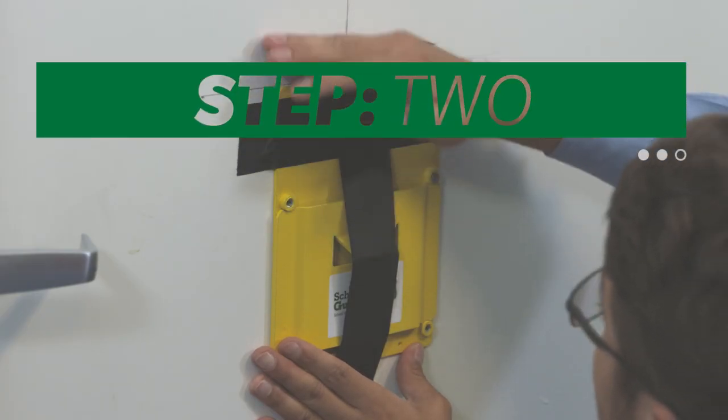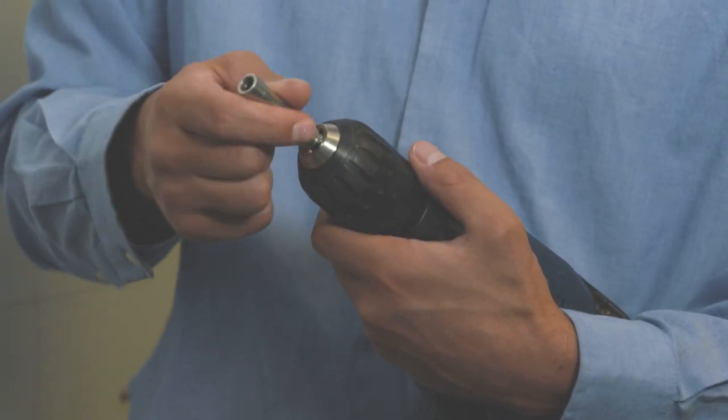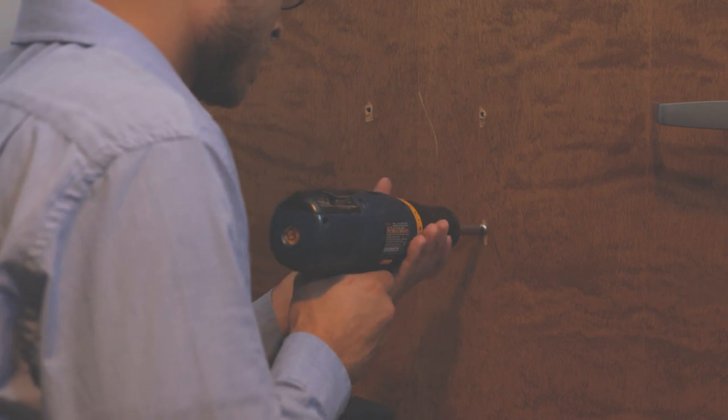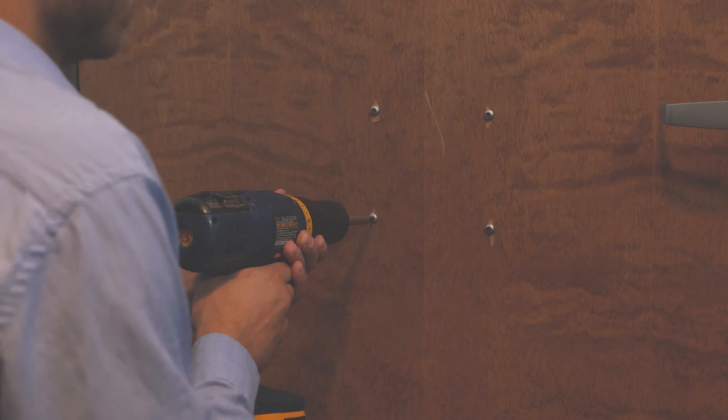Step 2. Align the door plate with the four pilot holes on the inside of the door. Using your drill and driver bit insert, install the four provided security bolts. Firmly tighten bolts, being careful not to strip out the security bolt head.